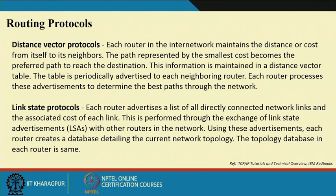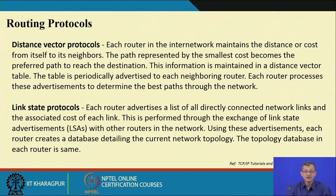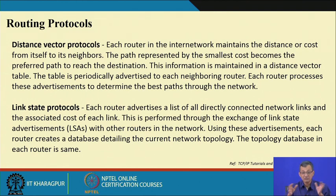Every router has localized information about its neighbors and the cost, and it goes on advertising. The advertisement period can be every 30 seconds, and there can also be triggered updates when there is any change. Based on this input and the table already available, a router updates its routing table — a kind of whispering that goes on throughout the autonomous system.